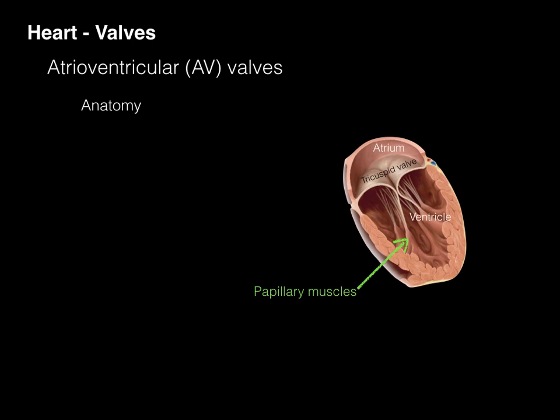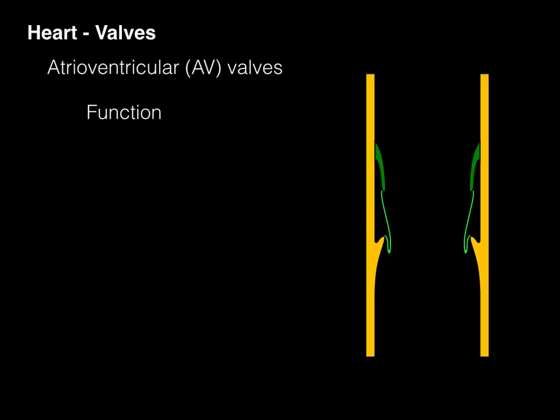Those muscles are going to be attached to the AV valves via these heartstrings called chordae tendineae, which just means tendinous cords. These tendinous cords attach from papillary muscles to the actual AV valve. Their function is the papillary muscles and chordae tendineae prevent prolapsing of these AV valves during systolic contraction. Now what does that mean?